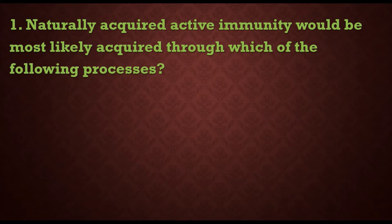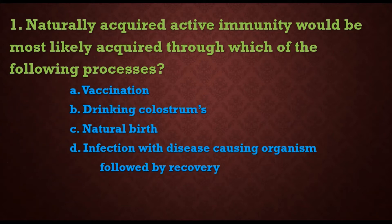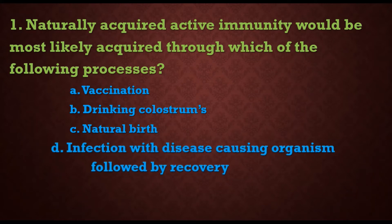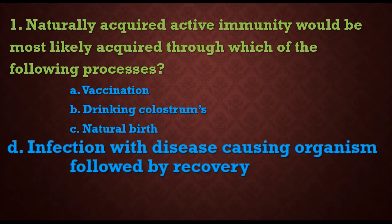First question: naturally acquired active immunity would be most likely acquired through which of the following processes? Options are: a) vaccination, b) drinking cholesterol, c) natural birth, d) infection with a disease-causing organism followed by recovery. The answer is d) infection with a disease-causing organism followed by recovery. Naturally acquired active immunity occurs when you are directly exposed to an infection naturally.